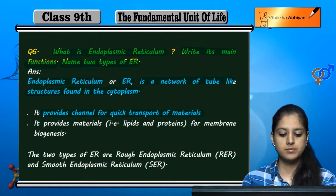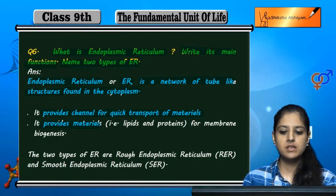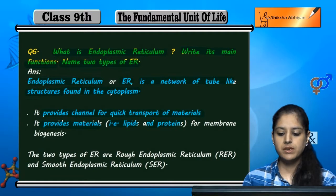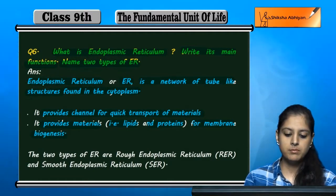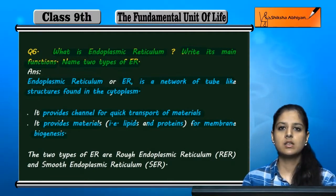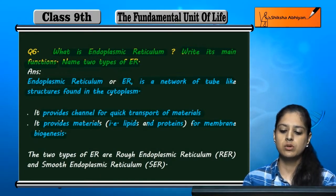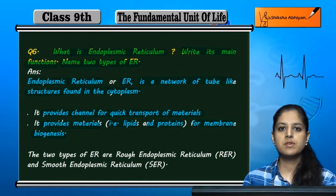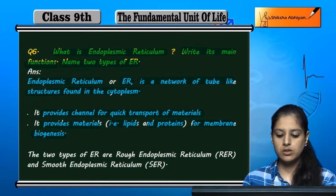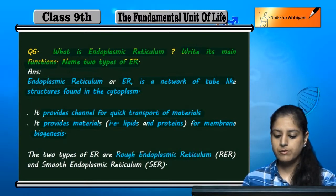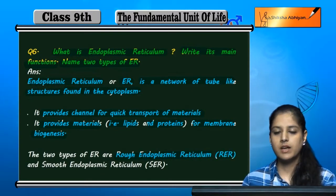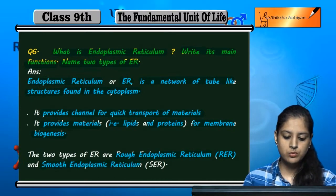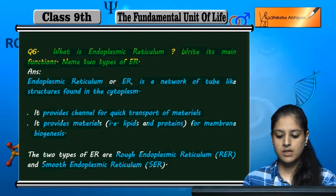It provides materials like lipids and proteins for membrane biogenesis. Two types of endoplasmic reticulum are rough endoplasmic reticulum and smooth endoplasmic reticulum, that is SER.